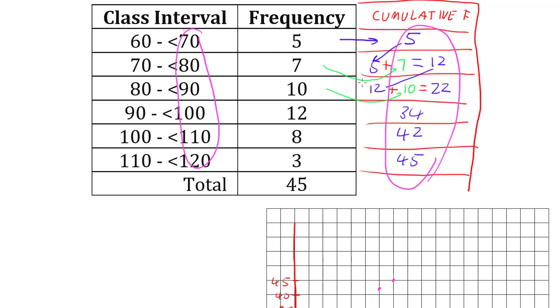the zero for cumulative frequency would be at the bottom number because before we've even started working our way through the numbers, we have no numbers at all.